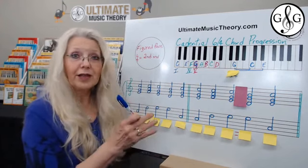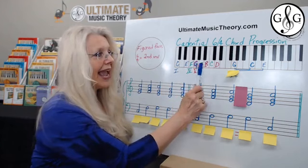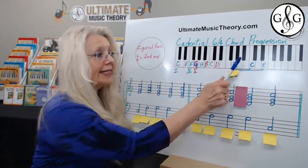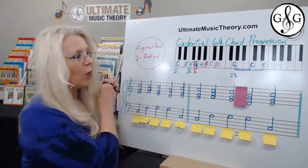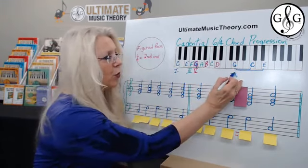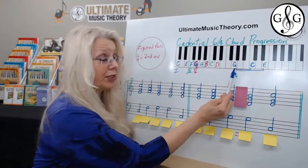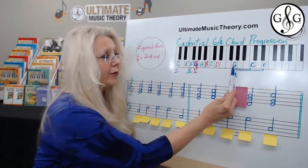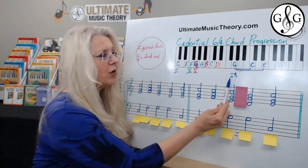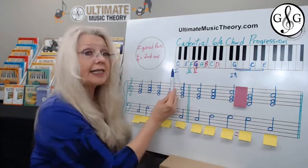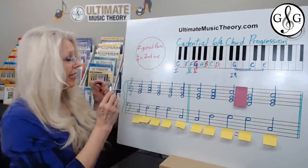If we take the C major triad C-E-G and put it into second inversion, we can look at the intervals. The root is now G; from G to E is an interval of a sixth, and from C to G is an interval of a fourth. So that's called a 6-4 chord. It's still the C major chord but in second inversion.